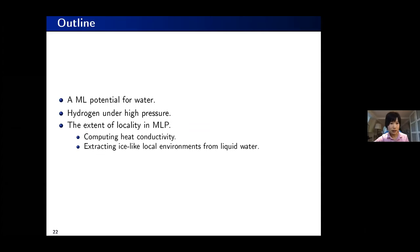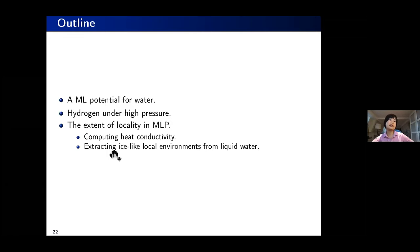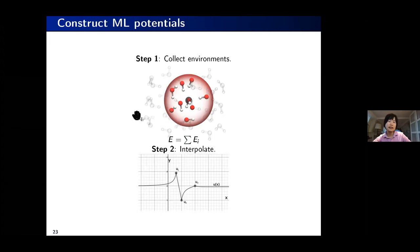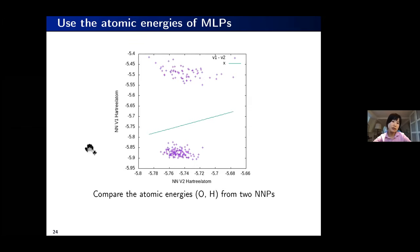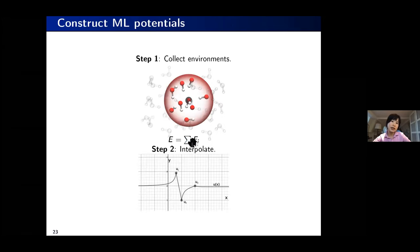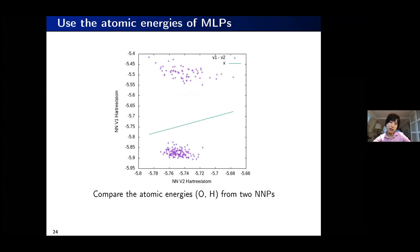Now back to this last part about the locality argument. Machine learning potentials start from atomic environments: each atomic environment gives us an atomic energy, and we sum these up to get the total energy. Plotting atomic energies from two different machine learning potentials on x and y axes for water, they are not correlated at all. Even comparing molecular energies — the sum of atomic energies of oxygen and hydrogen in each water molecule — they are still not correlated. This tells us that the atomic energy we rely on heavily in machine learning potentials is really a mathematical device; it doesn't carry deep physical meaning.